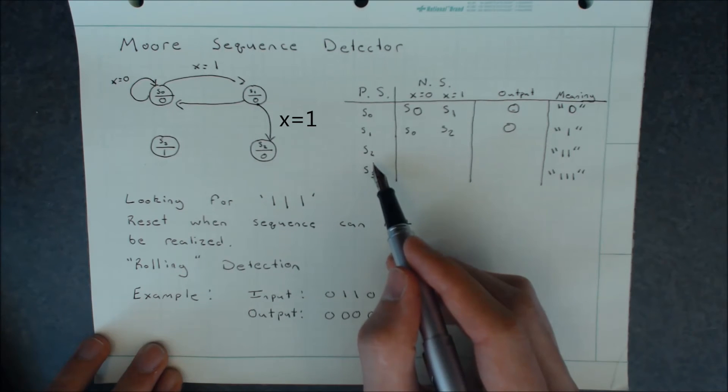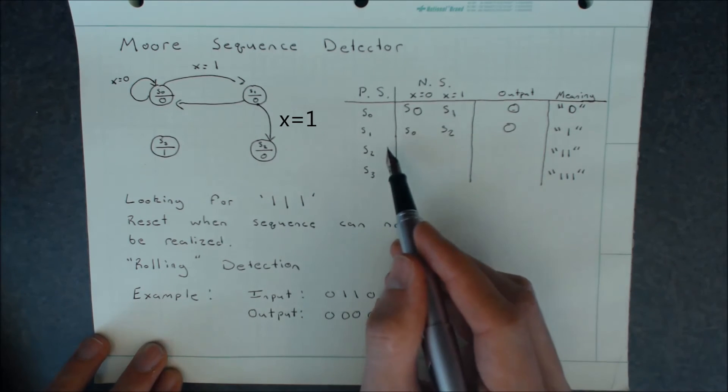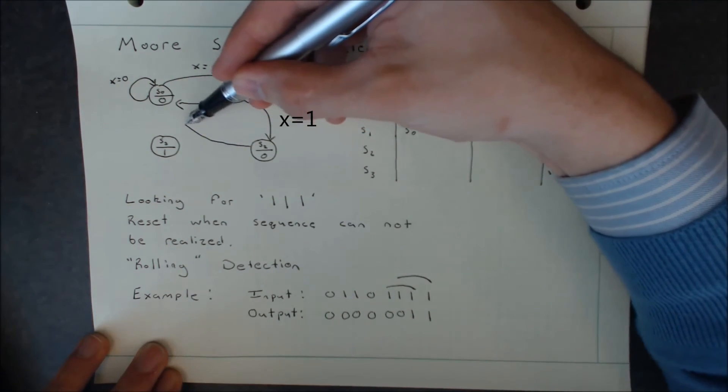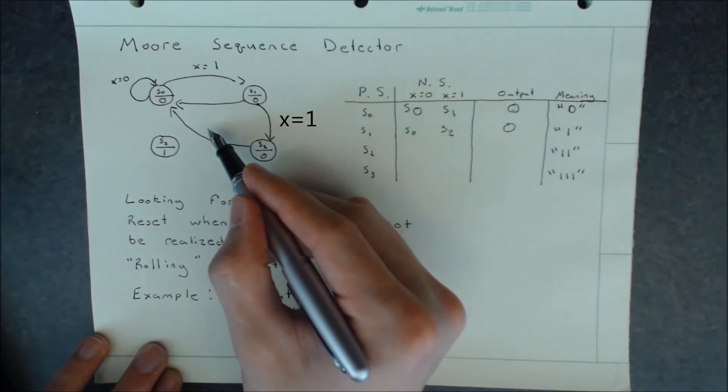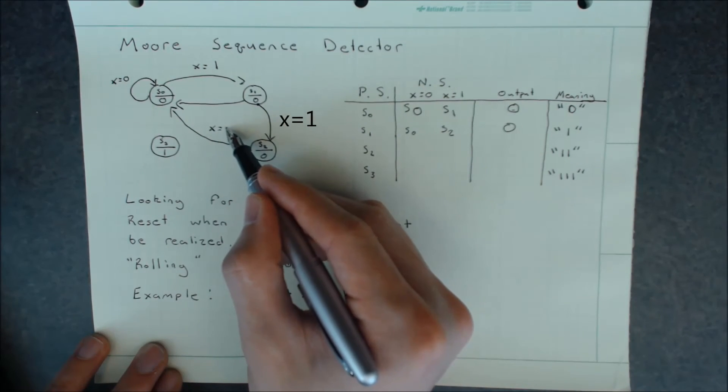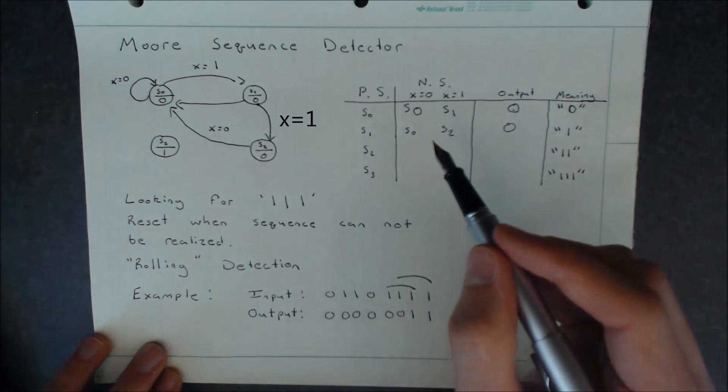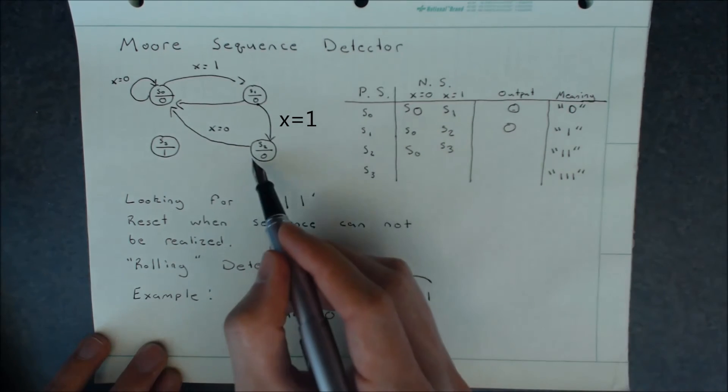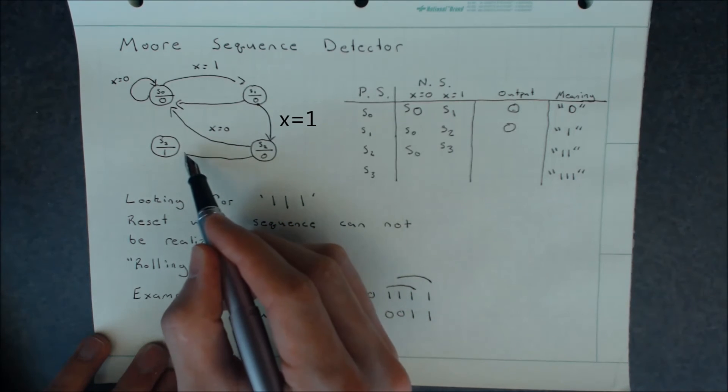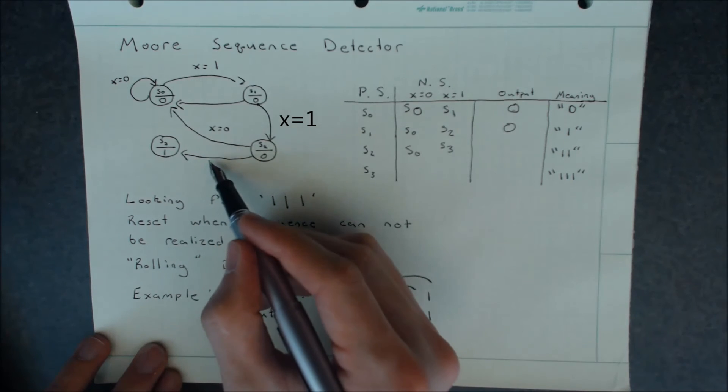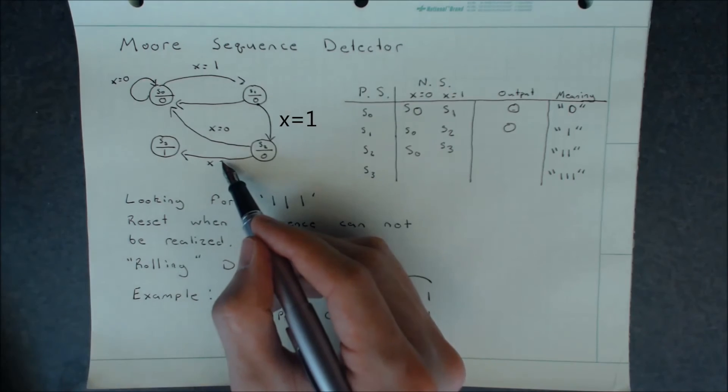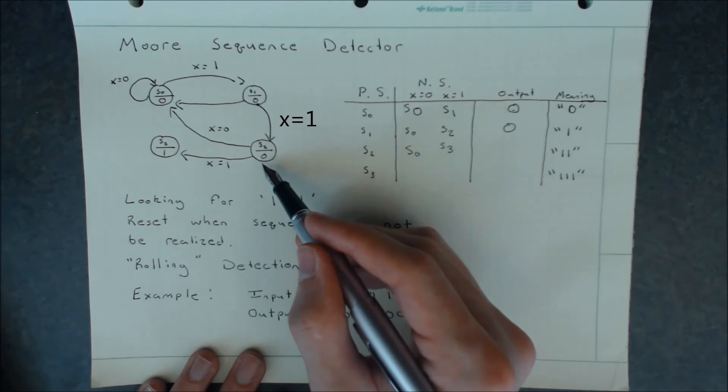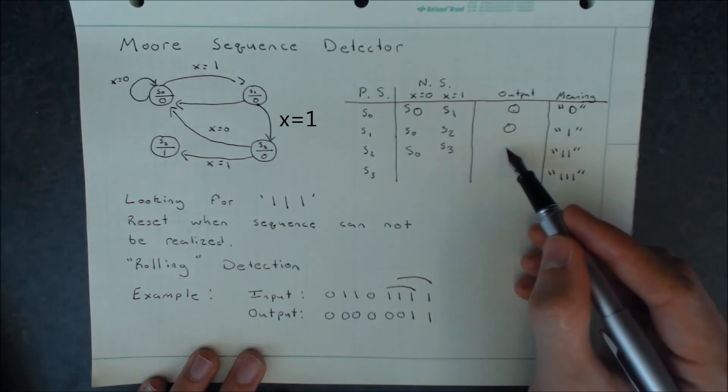Moving on to S2, if we follow the same process, if we receive a 0, we'll be resetting. And we'll be continuing on if we receive a 1 to S3. Now, if we look at S2 again for our output, we'll see that our output is still a 0.